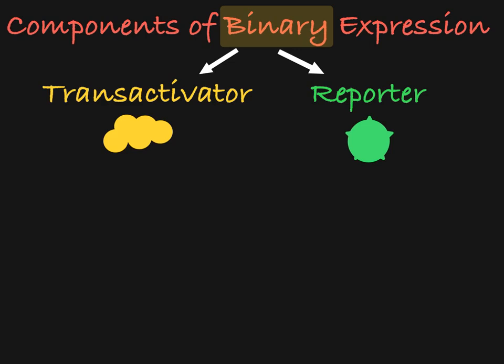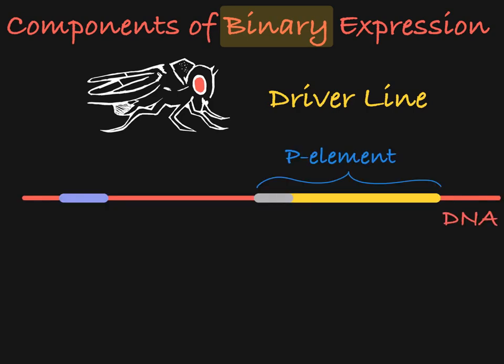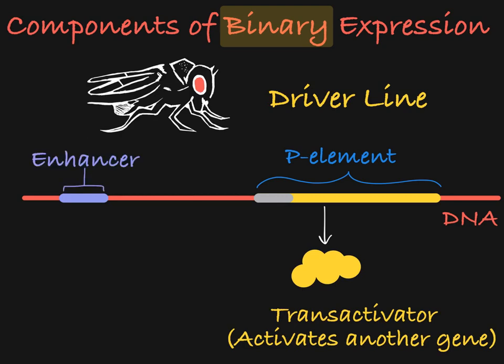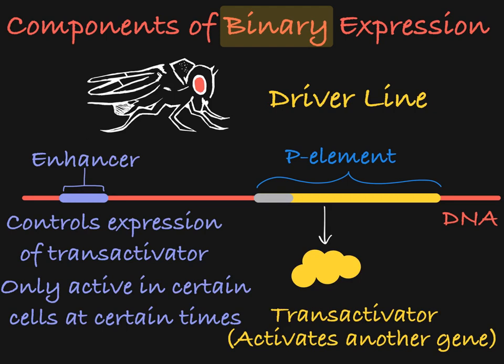So we start with two lines of flies. The first line, called the driver line, contains a P-element insertion that encodes a transactivator, a protein that serves to activate expression of another gene. This transactivator will be under the influence of a native promoter or enhancer, and it will only be expressed in cells of the organism in which the enhancer is active.